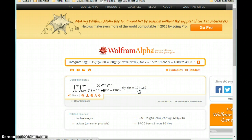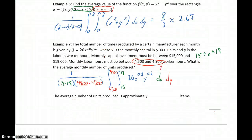We get a result of 1,041.67, or rounding to the nearest whole number, the average number of units produced is approximately 1,042.